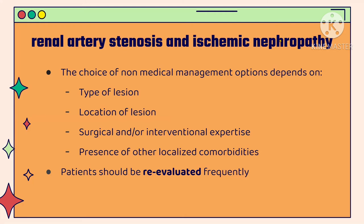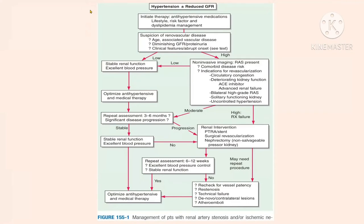Patients should be evaluated frequently, every three to six months. Management begins with initiating anti-hypertensive medication — ACE inhibitors and ARBs — along with lifestyle, risk factor, and dyslipidemia management. For low suspicion of renal vascular disease with stable renal function and excellent blood pressure control, optimize anti-hypertensive and medical therapy, then repeat assessment at three to six months. If stable, continue optimizing therapy.